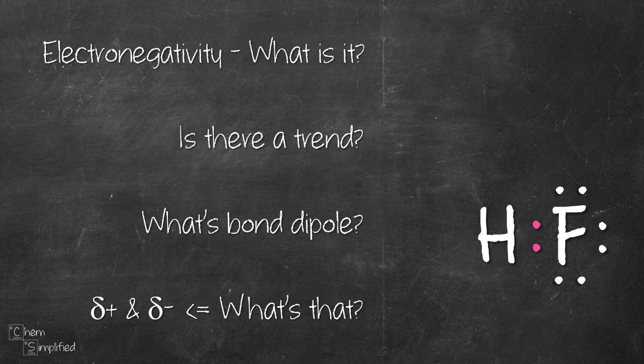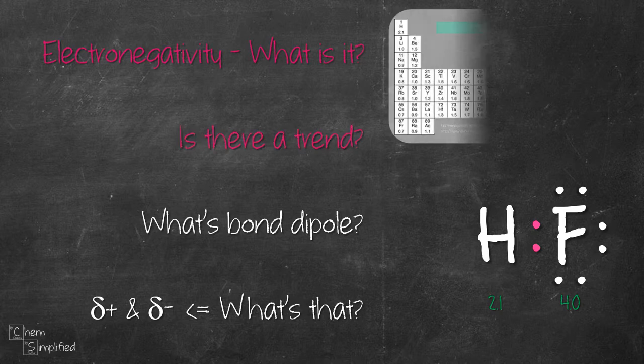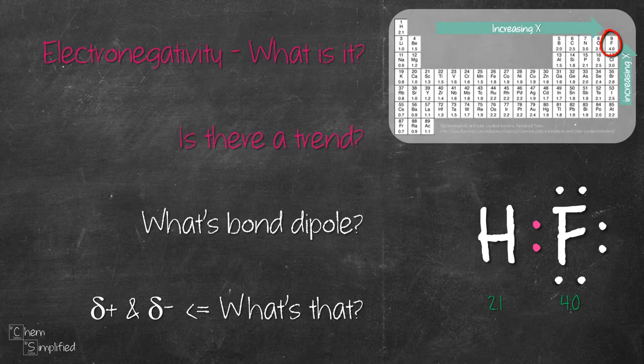To recap, electronegativity is represented in numbers, showing how well an element can attract electrons in a bond. The larger the number, the stronger it can attract the electrons. The value increases as you go from left to right, bottom to top.